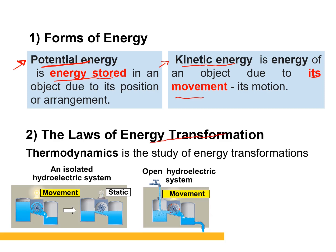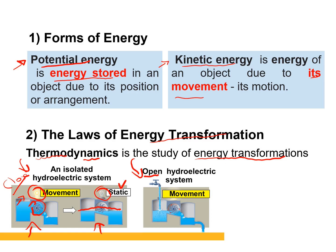The laws of energy transformation fall under the field of thermodynamics. Your textbook uses a hydroelectric system to illustrate the difference between a closed system and an open system. In the closed system, there is initial movement and the light is on, but eventually movement stops, the light goes off, and equilibrium is reached — you can no longer perform work. In the open system, water is always falling, there is always movement, and the light bulb stays on because work can always be performed.